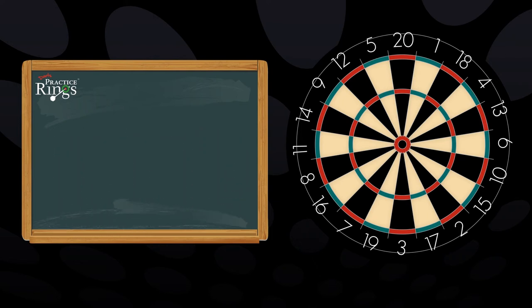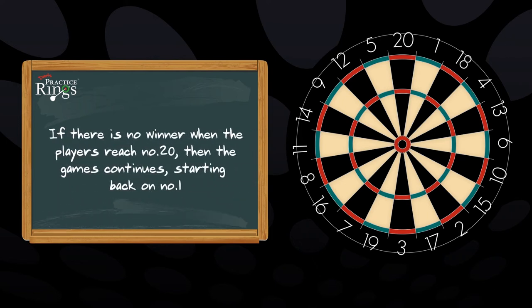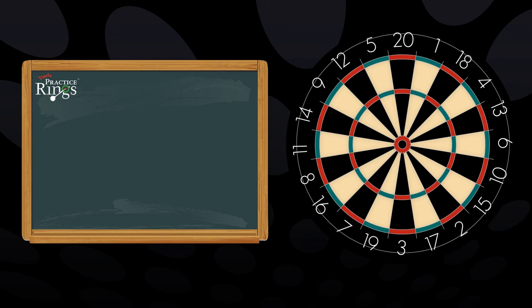If there is no winner when the players reach number twenty, then the game continues starting back at number one, with the next ring size down, the number four ring, on one, two, three, and four.